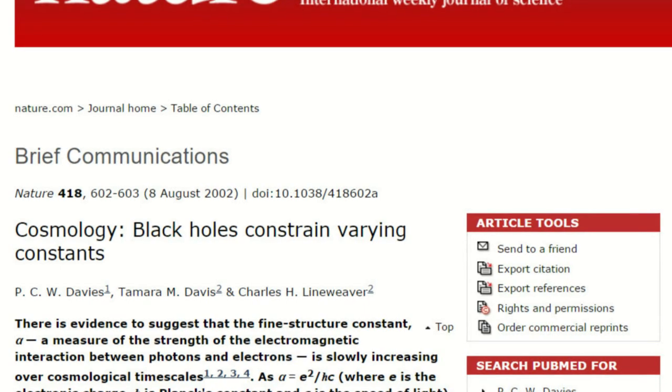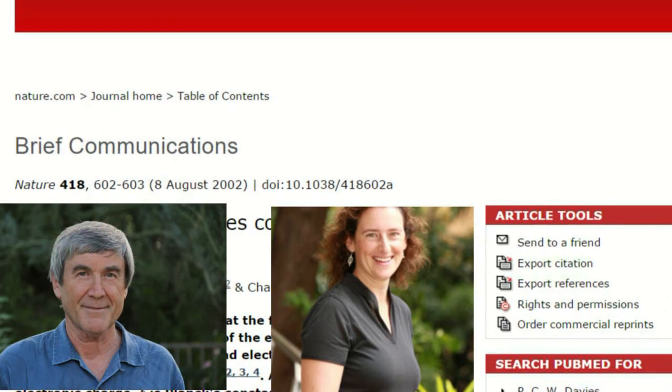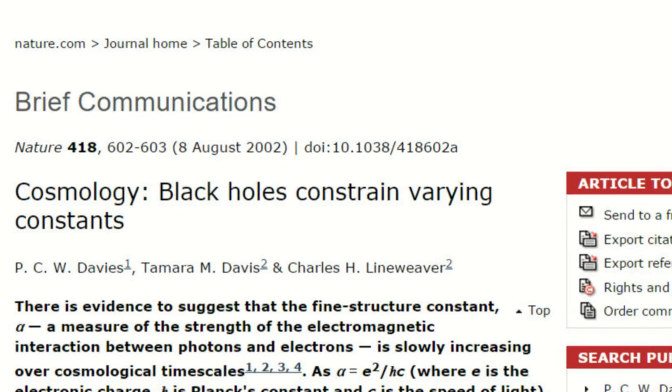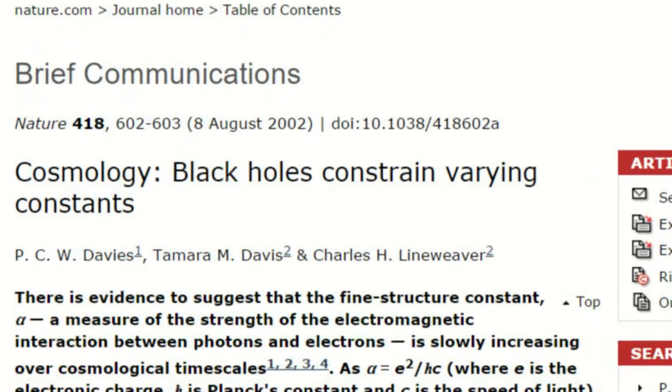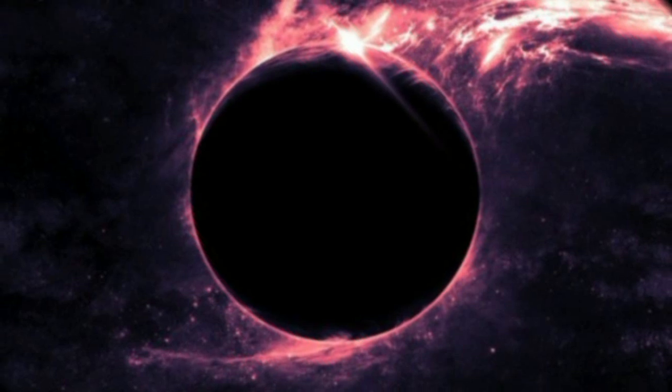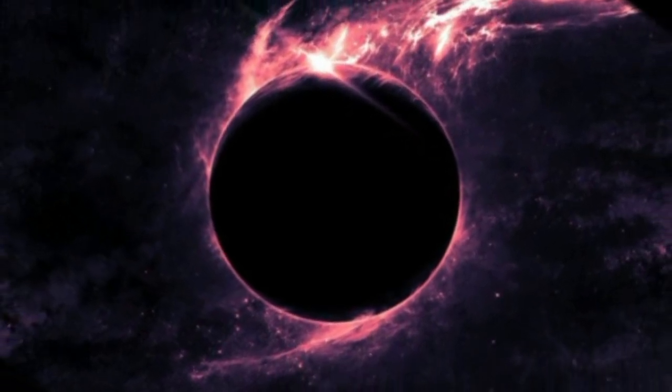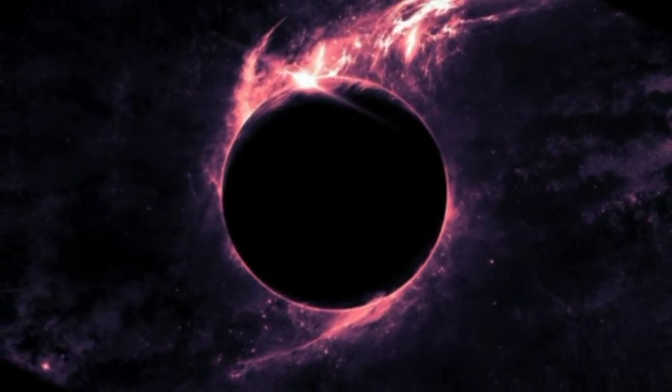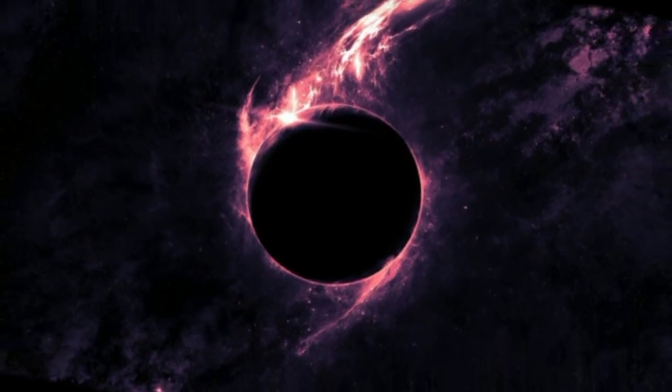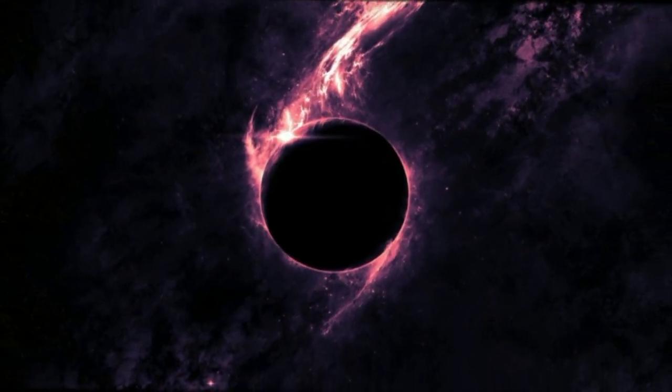In 2002, PCW Davies, Tamara Davis, and Charles Lineweaver published a paper in the journal Nature arguing that black holes demonstrate that many, if not all, constants in the universe are variable. The paper used thermodynamics to determine that a change in the electromagnetic interaction between protons and electrons, defined as alpha, over time would predict a steady decline in the speed of light.